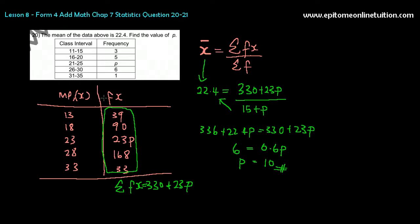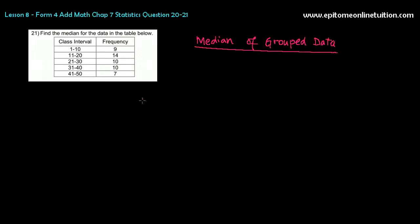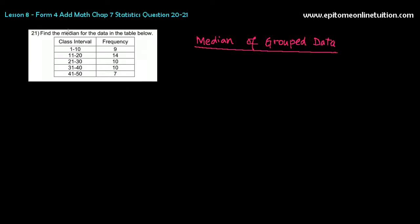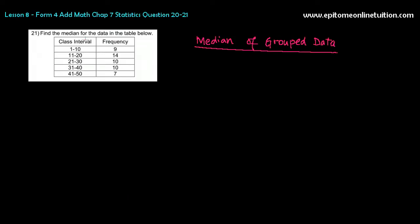Now I'm going to go through median. Let's have a look here. In question 21, you're required to find median. So we have learned how to find mode of grouped data. Now you are learning how to find mean. You have learned how to find mean. Now you're going to learn median.